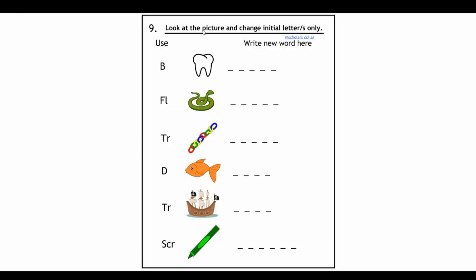Next, look at the picture and change the initial letters only. You're looking at the picture, this is tooth, so you're only changing the T to the B so that will make the word boot. Here the picture is snake, so you're changing the SN to the FL so that will make flake. This is a chain so TR, train. This is a fish so you're going to change the F to the D, so F to dish. This is a ship so you're changing the SH to the TR so that will make the word trip. Green, you're changing the GR to the SCR, that is a trigraph here, and that will make the word scream.